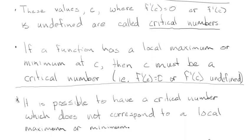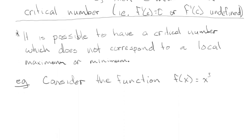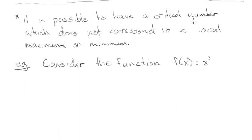One thing to note about this, though, and this is an important point, is you could have critical numbers that are not maximums or minimums. So consider this function f(x) = x³. So we know what that looks like. And clearly from the graph, there are no maximums or minimums.